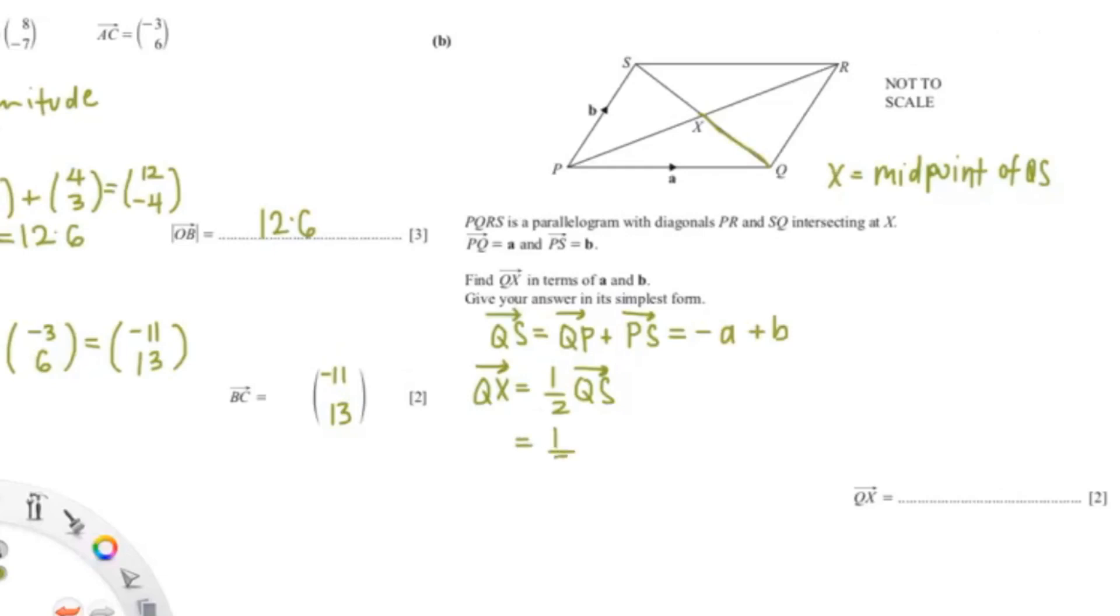So that would be 1 over 2 times B minus A. So our answer is 1 over 2 times B minus A.